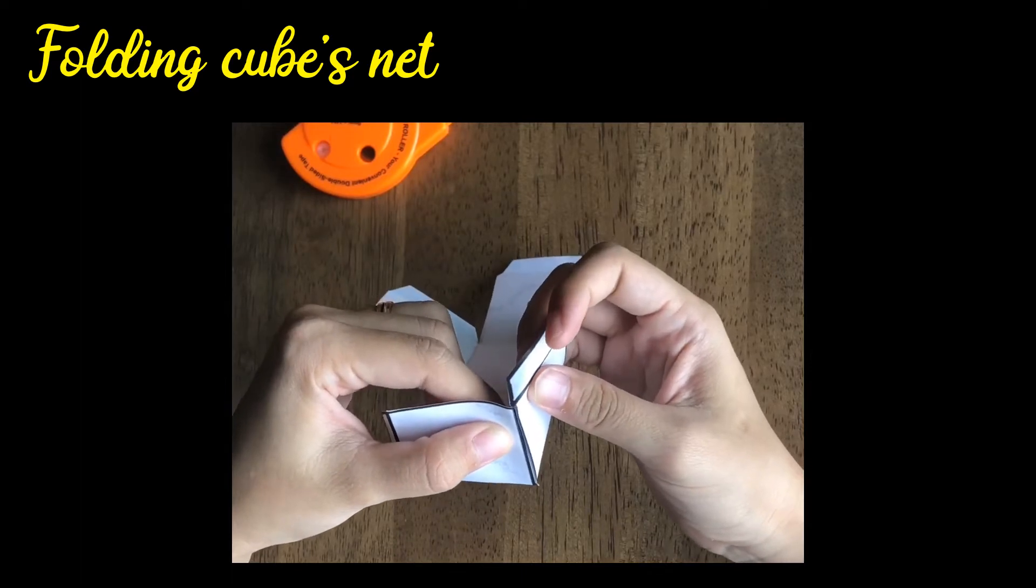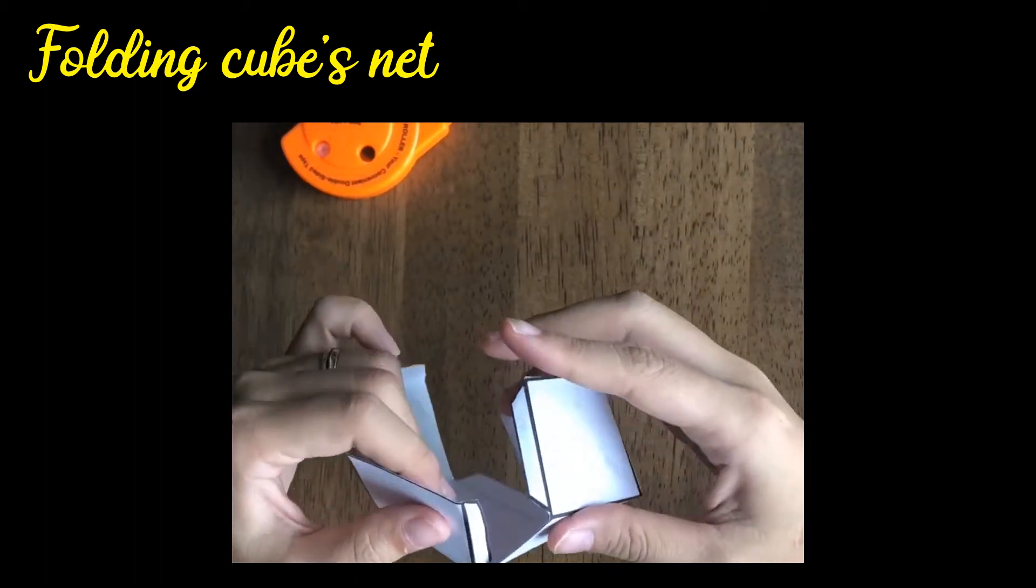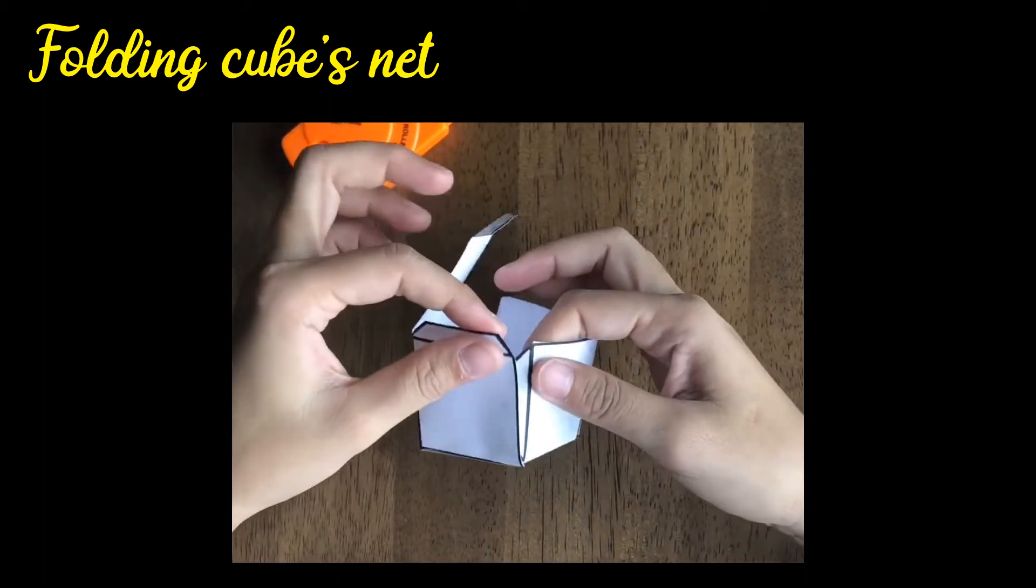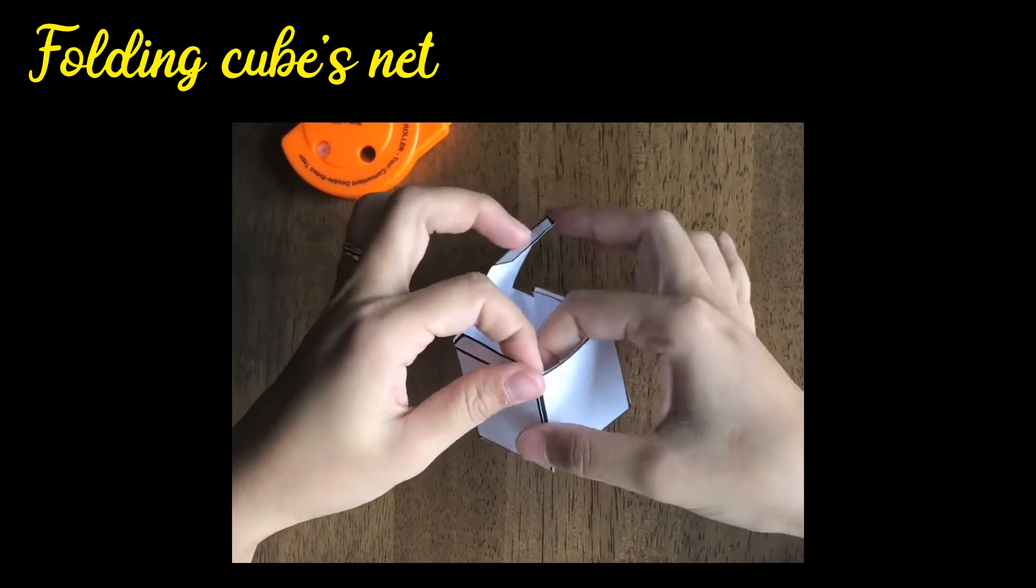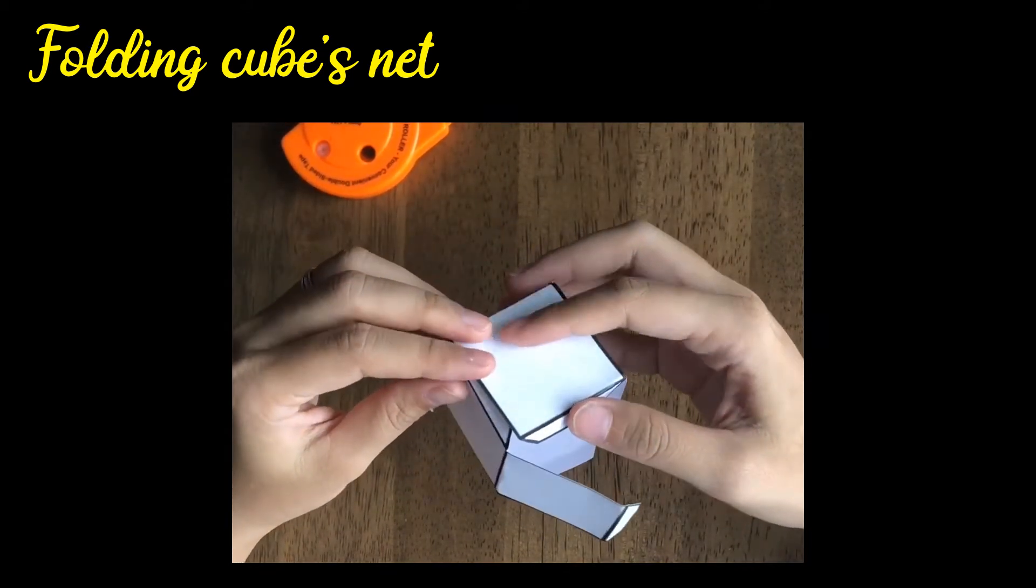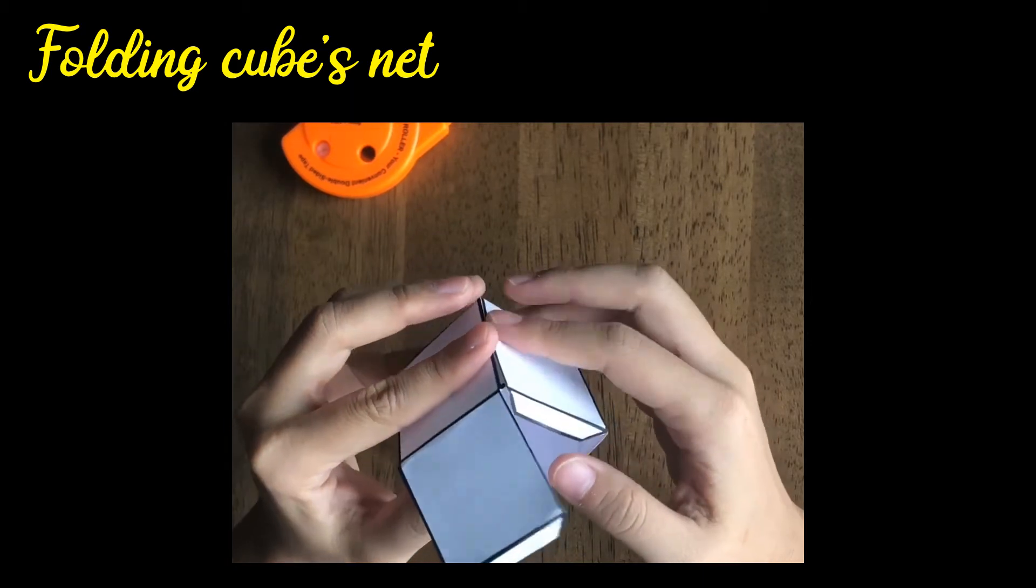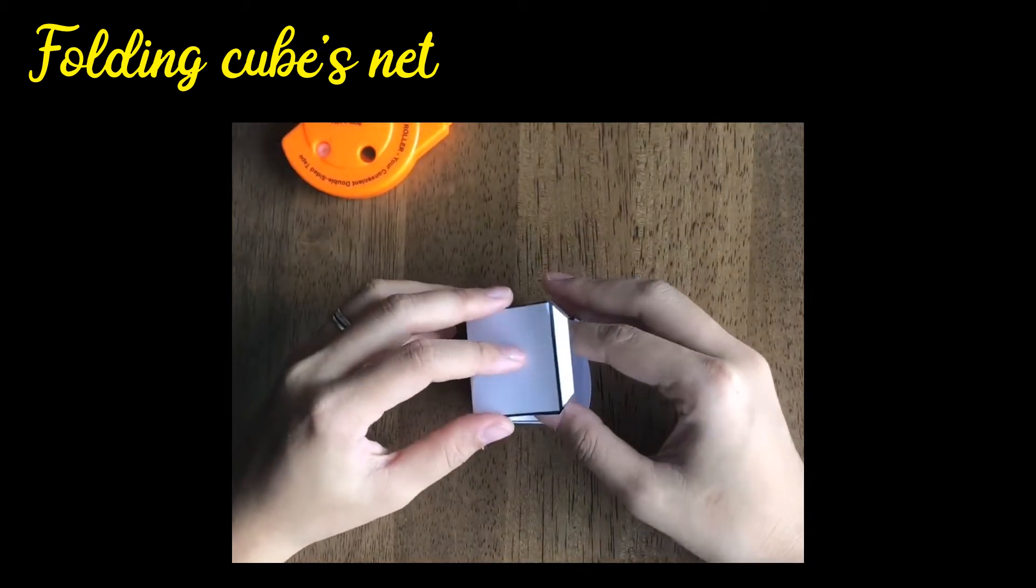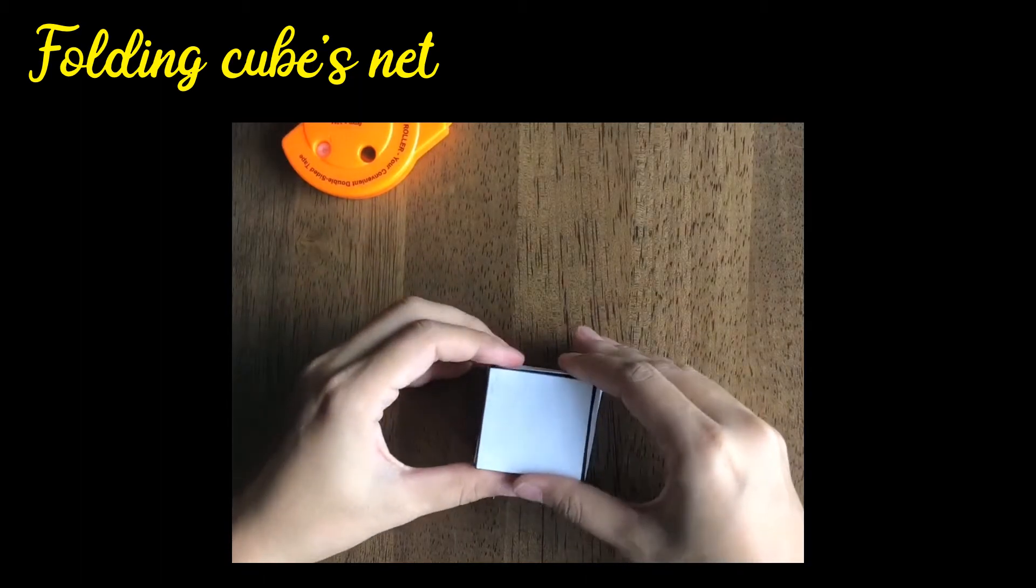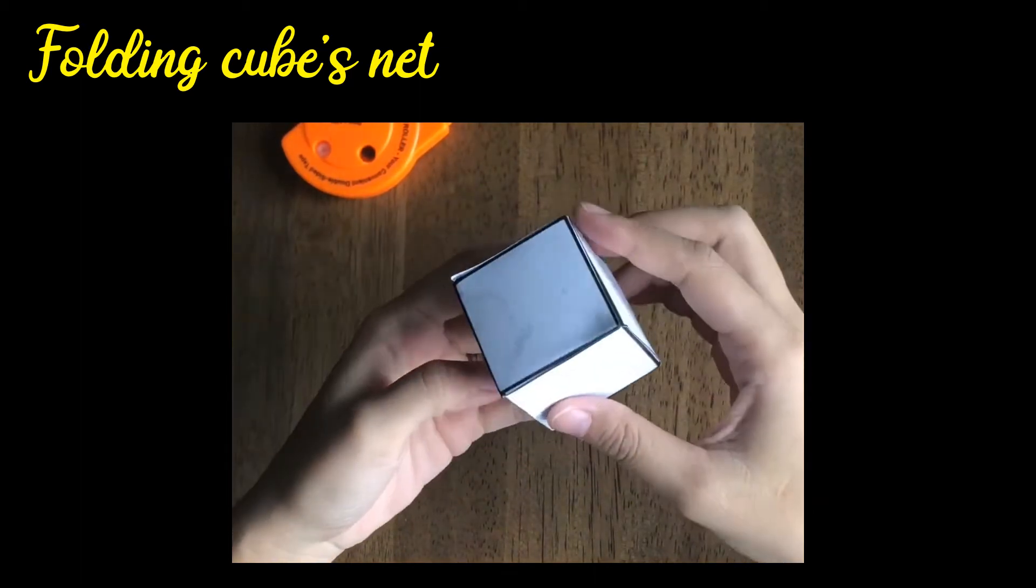Then you fold it and on the small side, make sure it's inside. Make sure the smaller side goes inside so you can stick it. Then you get it like this. You get a cube from the net.